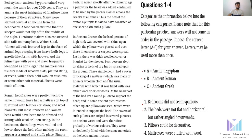In a similar way, we have to do this task. What they have said is: categorize the information below into the following categories — these are your information and these are your three categories. Please note that for this particular practice, answers will not come in order in the passage. Choose the correct letter A to C for your answers, and letters may be used more than once. The four questions are: bedrooms did not seem spacious; the beds were not flat and horizontal but rather angled downwards; pillows could be decorative; and mattresses were stuffed with wool.